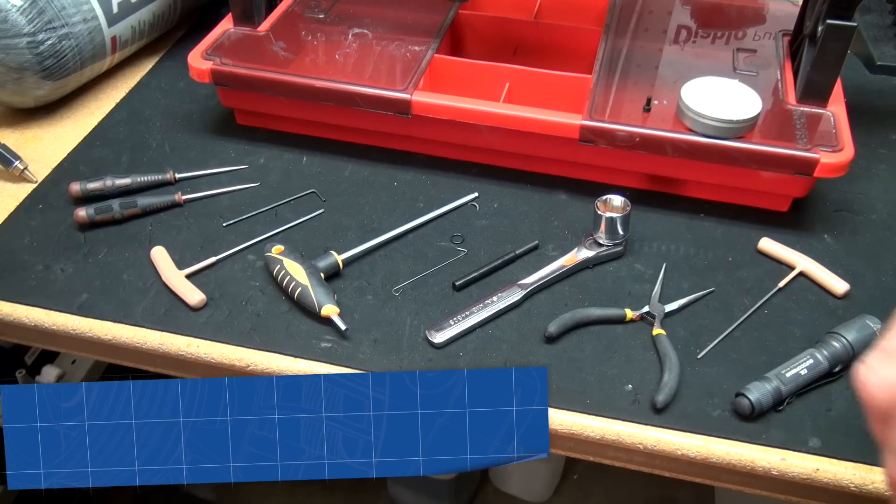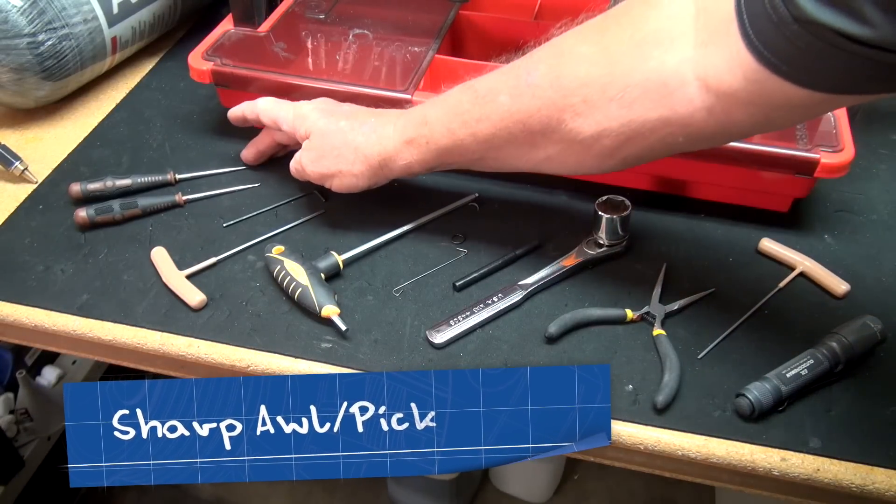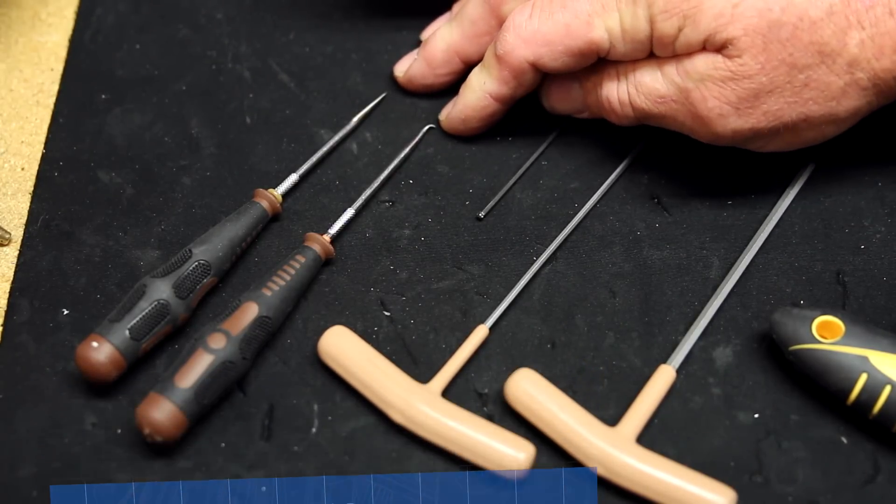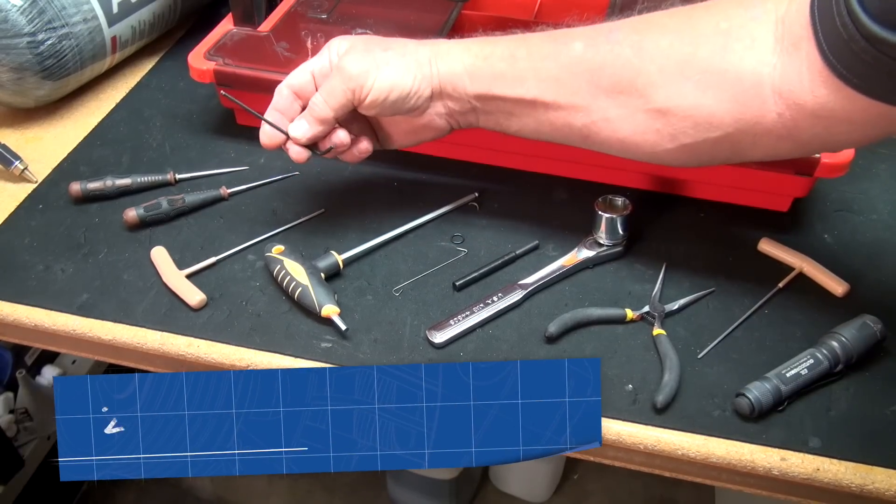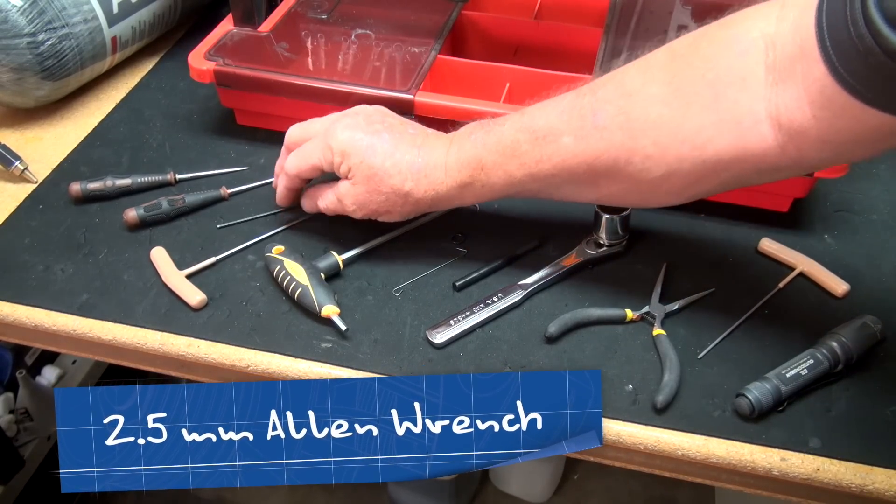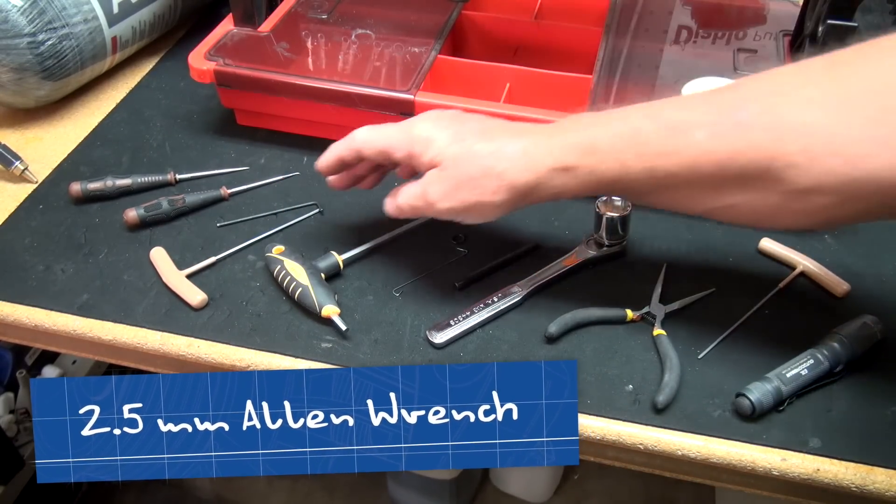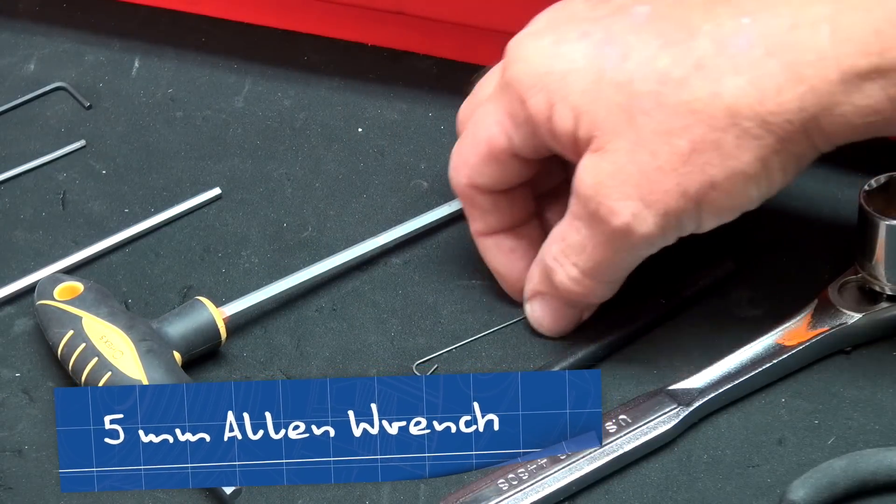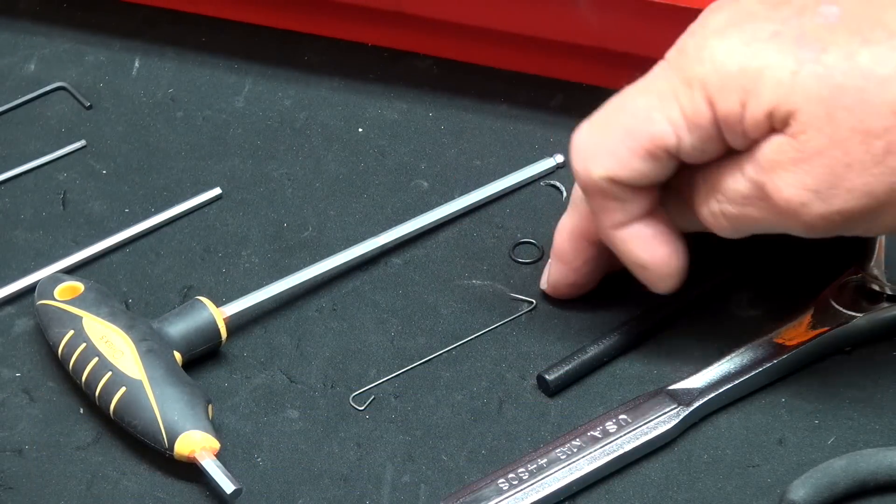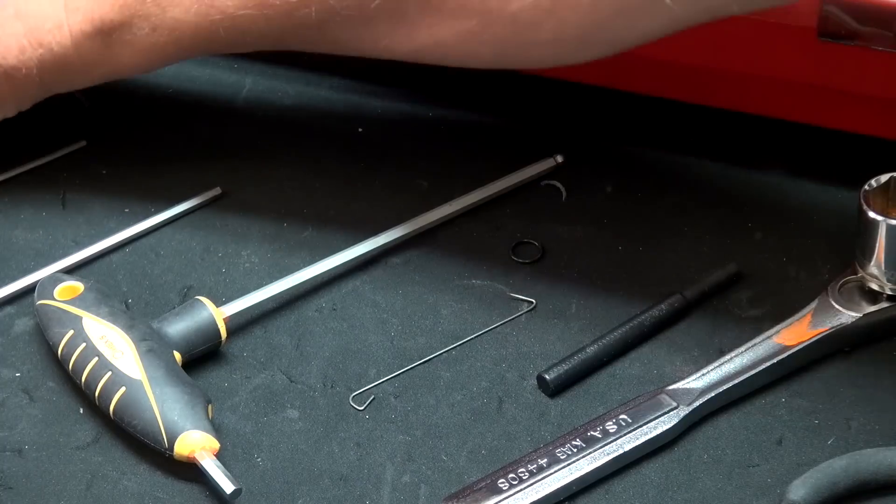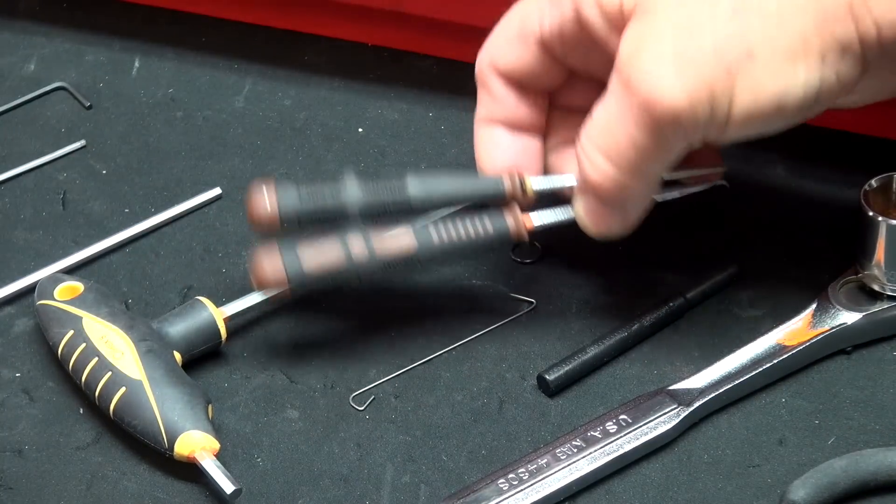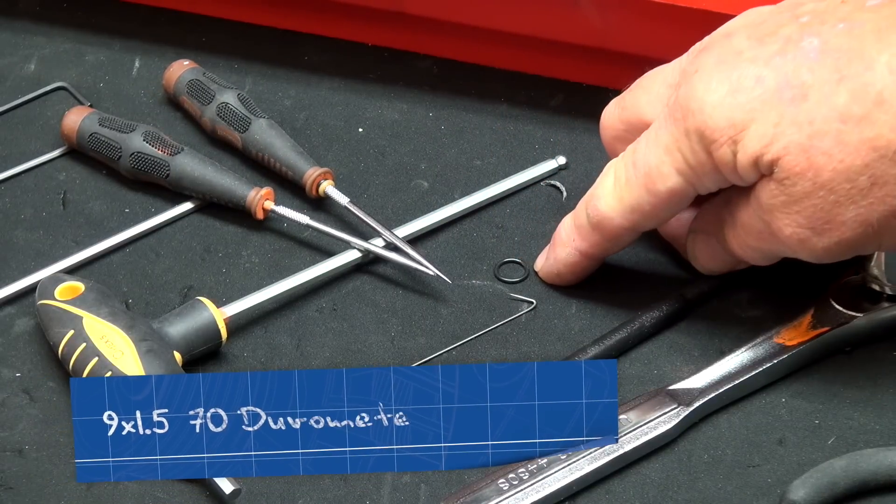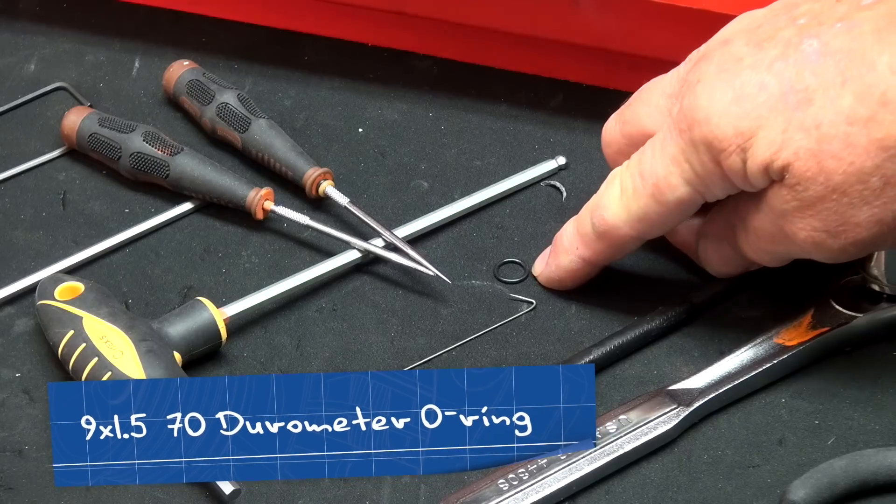The tools you're going to need for this service are a very sharp awl, or like a needle on the end of a dowel would work well too. The 2.5mm Allen wrenches are to adjust the reg and remove the trigger guard. The 5mm ball driver is to remove the reg housing. This is another pick that the factory uses to get behind the O-ring and pull it out. And I use these two tools to remove the O-ring that's inside the receiver. Again, that's a 9x1.5.